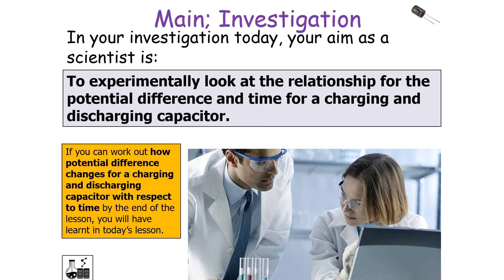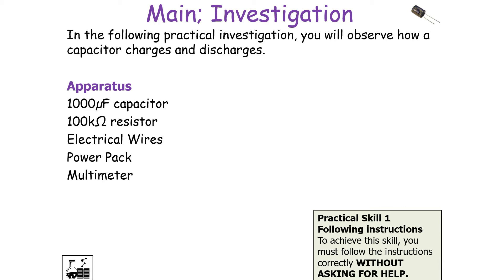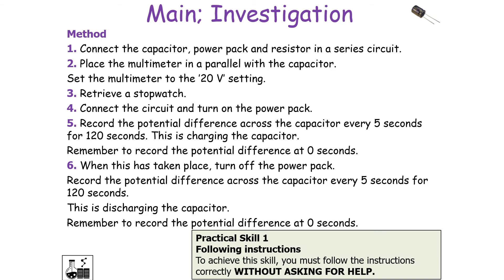We can look at this experimentally by investigating the relationship between potential difference and time for a charging and discharging capacitor. You will need a capacitor, a resistor, electrical wires, a power pack, and a multimeter. Connect the capacitor, power pack, and resistor in a series circuit; place the multimeter in parallel with the capacitor; set the multimeter to 20 volts. Turn on the power pack and record the potential difference across the capacitor every five seconds for 120 seconds — this is charging. Remember to record at zero seconds. Then turn off the power pack and record the potential difference every five seconds for 120 seconds — this is discharging. Remember to record at zero seconds.